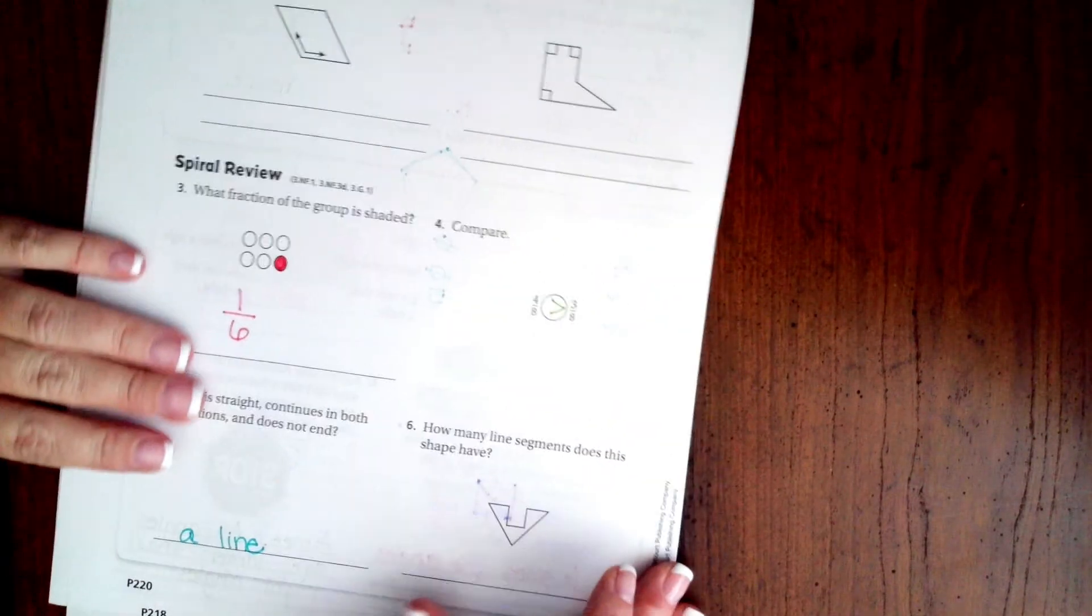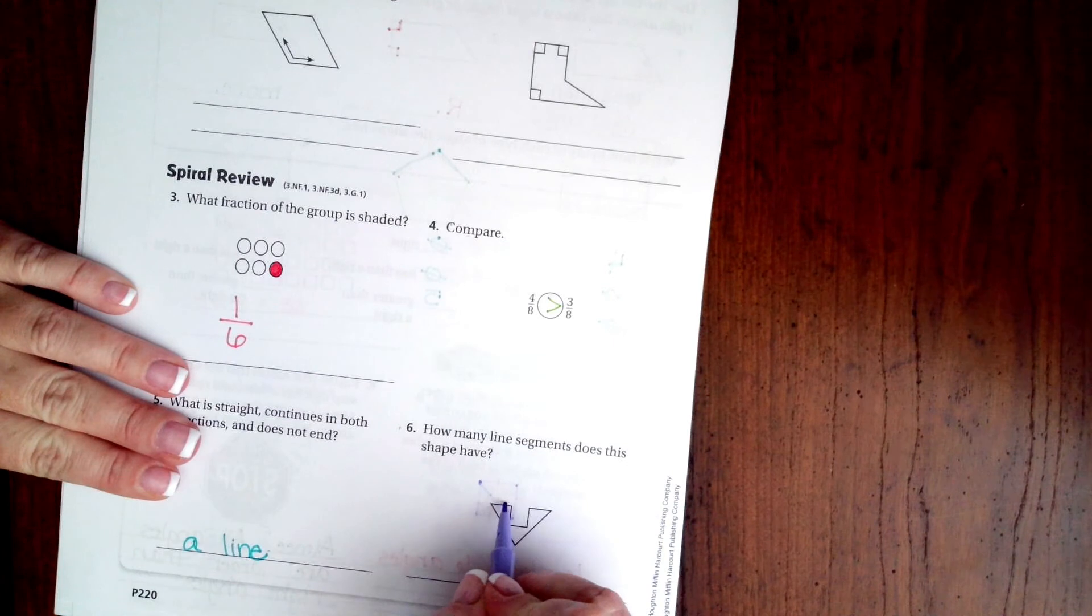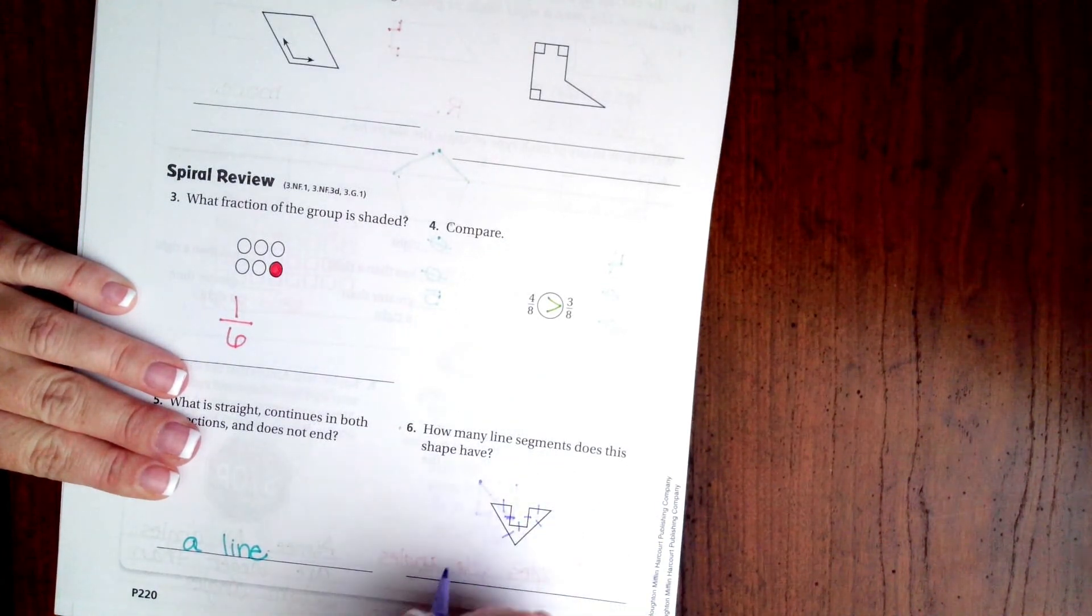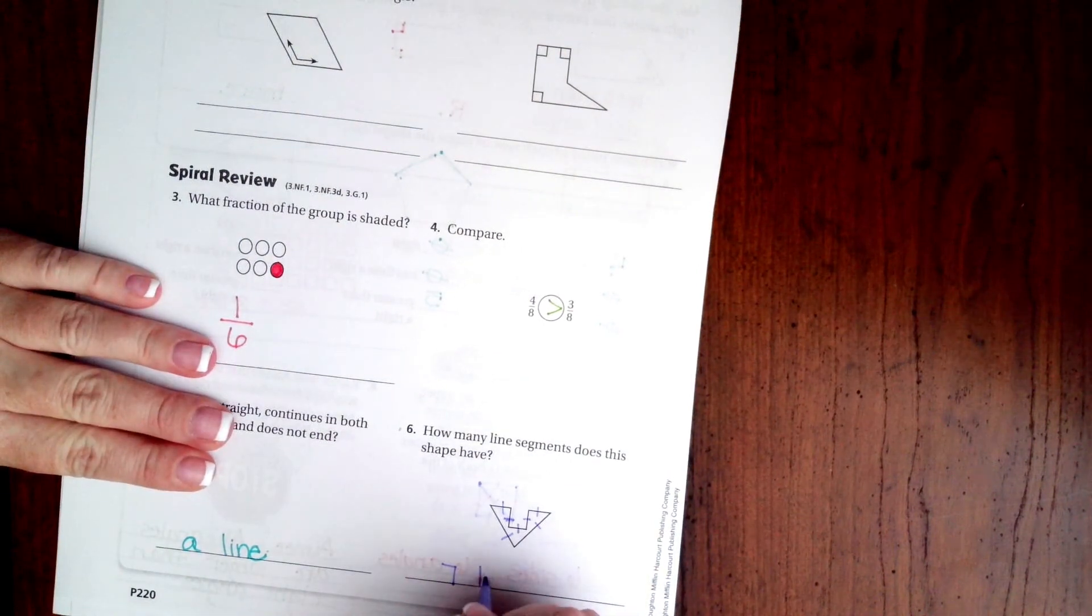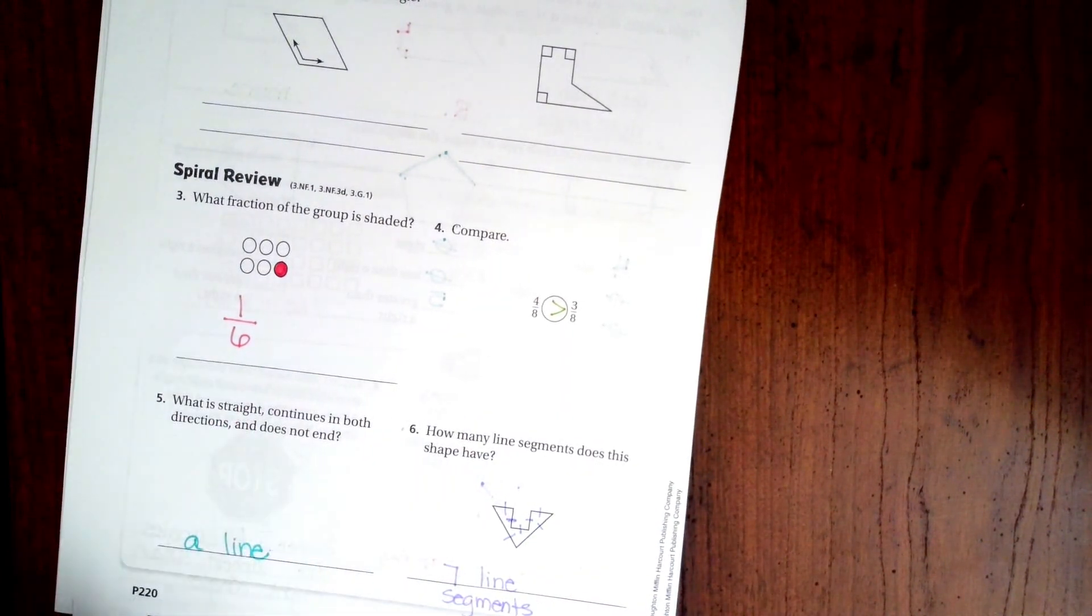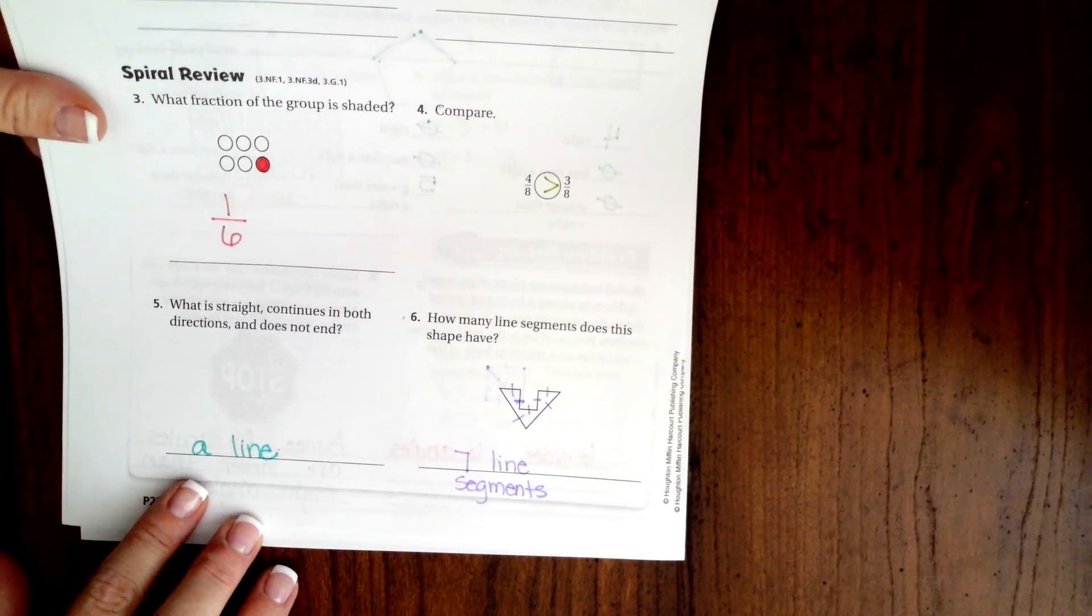How many line segments does this shape have? Well, one, two, three, four, five, six, seven. Seven line segments. All right guys, thanks for hanging out for 12.2. Come on back for 12.3. See you soon.